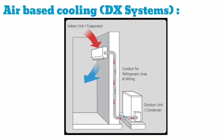DX stands for direct expansion and is a term that uses refrigerant as the cooling medium. With DX cooling, refrigerant flows through the cooling tubes and air is blown over the tubes covered with fins. The air does not come in contact with the refrigerant, but only with the cold metal surface of the coil. Since the air is cooled directly by the refrigerant, the cooling efficiency is higher.